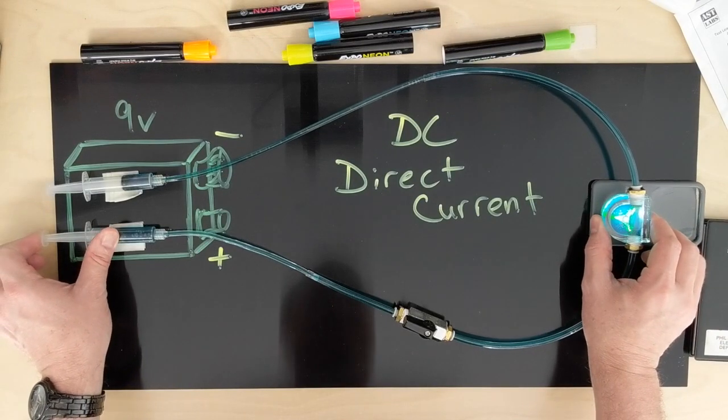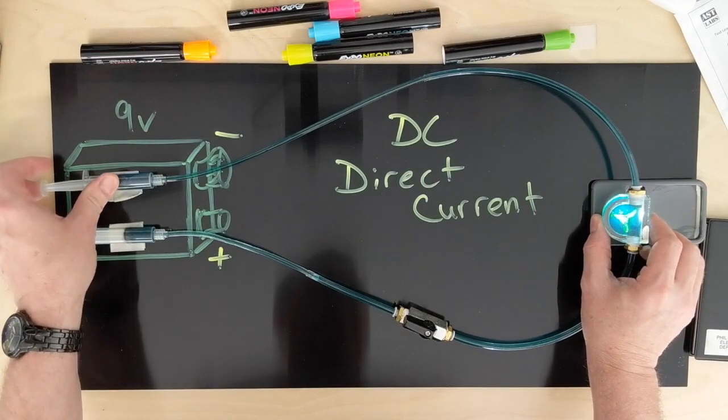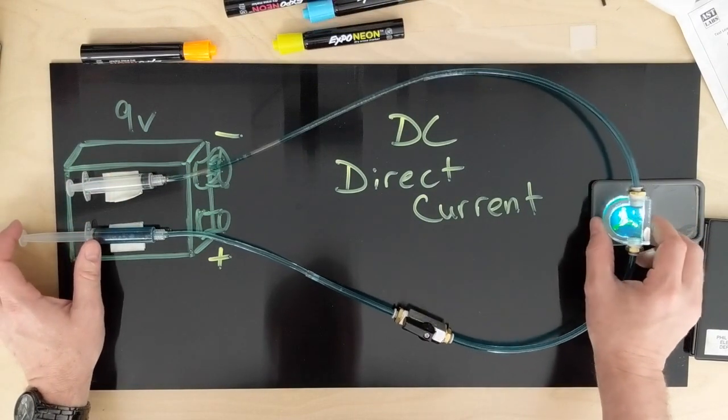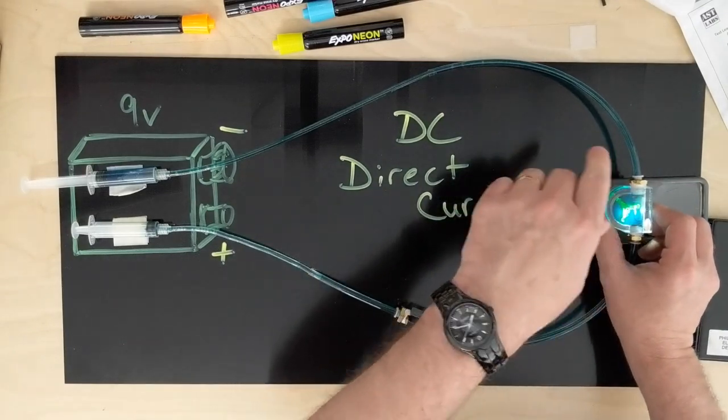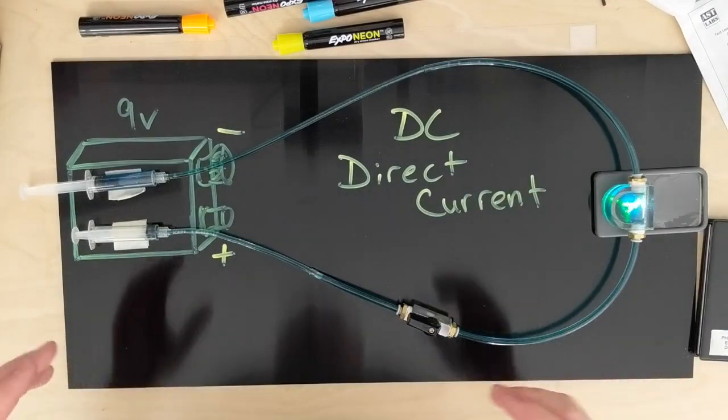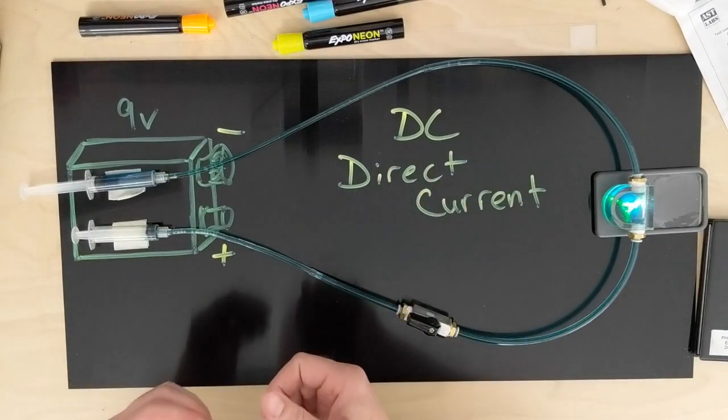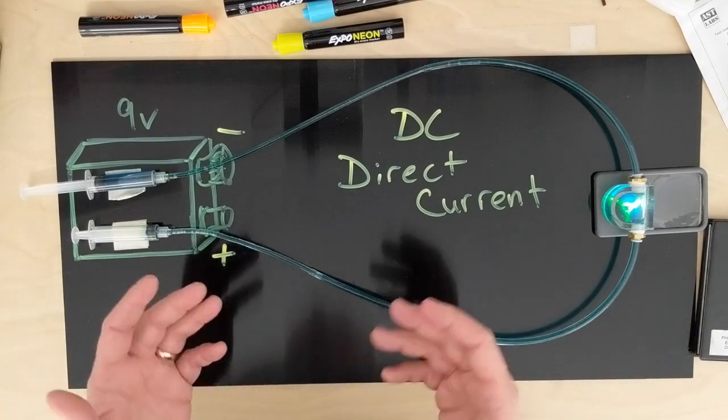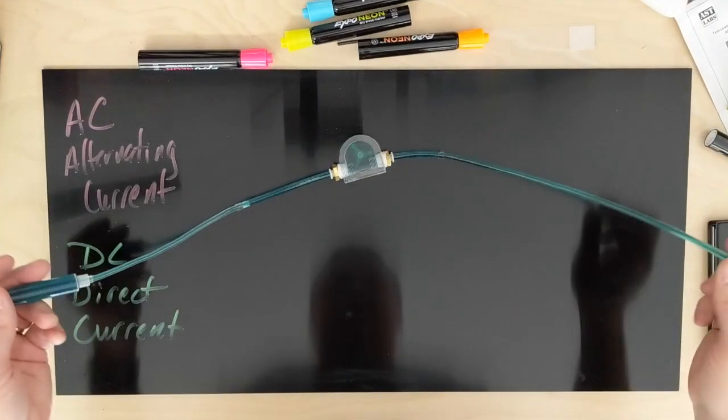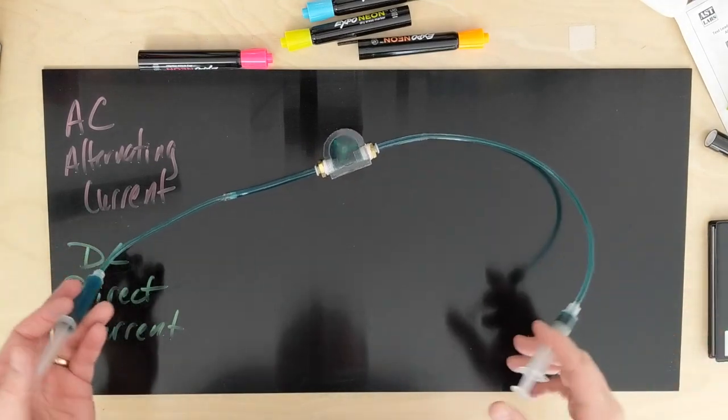From a positive to a negative flow, we show the flow in one direction. Well, what we use in our house when you plug up to an outlet is of course AC or alternating current.